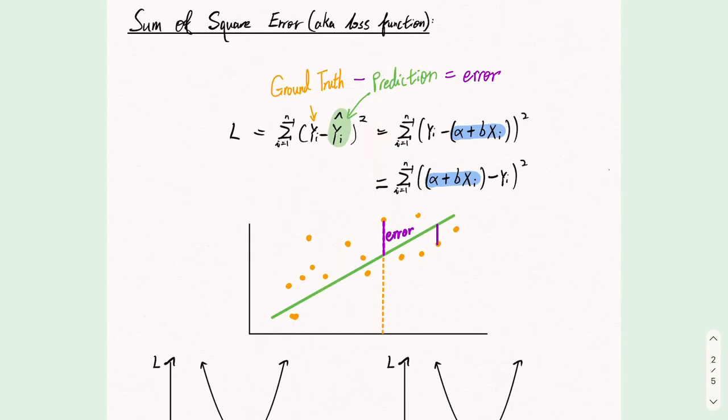Now let me introduce the sum of square error, aka the loss function in this case. When we are making a prediction, we want to make the errors as small as possible. So how do we define an error, or the loss?